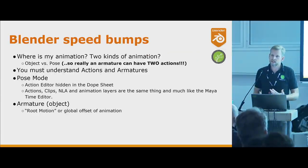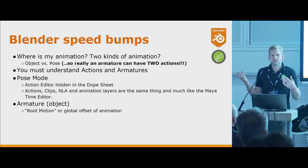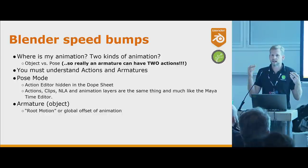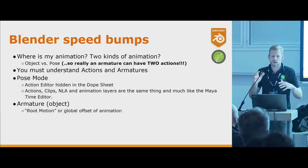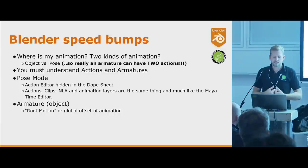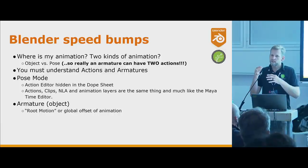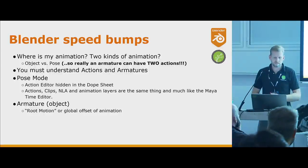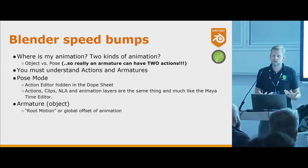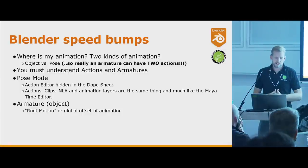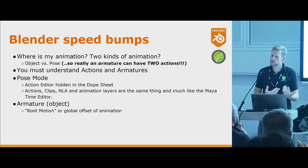The speed bumps I hit initially as an animator were: where are my animations? An object has object keys on an armature — like root motion in games — so you have this layer on the object. Then you enter pose mode and the keys shift and are in a new place. The action kind of has both if you let it. Now you're in two modes trying to edit something that's stuck in a clip, and it's really hard to understand.